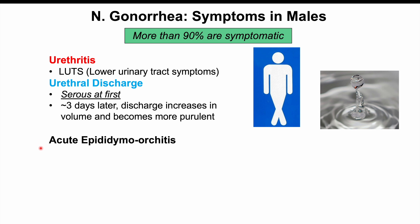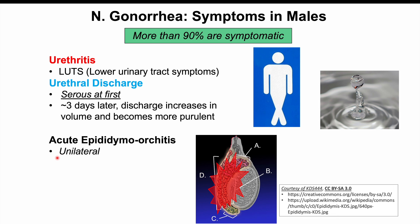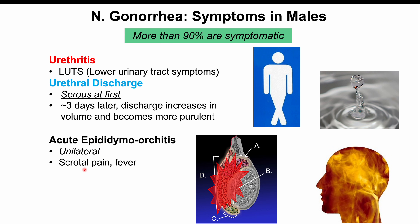Some male patients can also experience acute epididymal orchitis — inflammation of the epididymis and testicles — which is mostly unilateral and presents with scrotal pain and fever. In patients where infection is left untreated, urethral strictures can develop, leading to issues with urination or an intermittent urine stream.